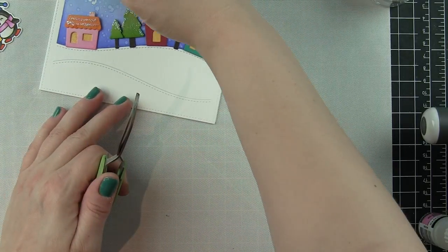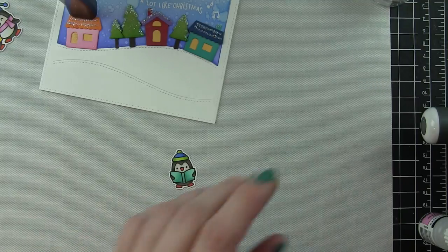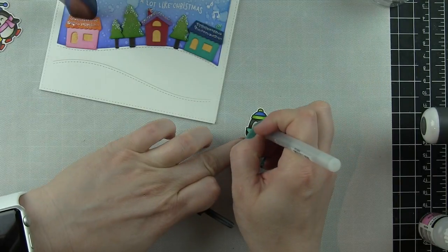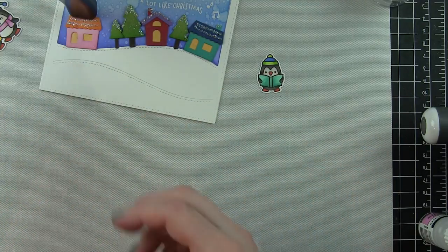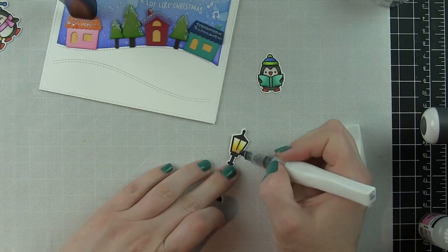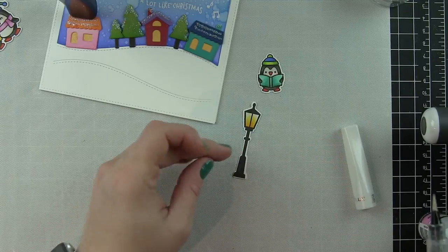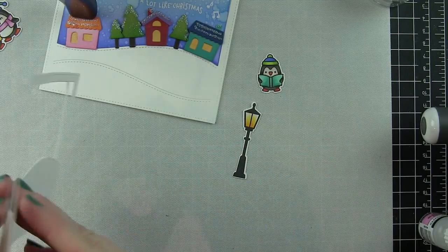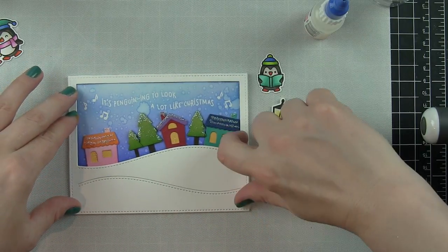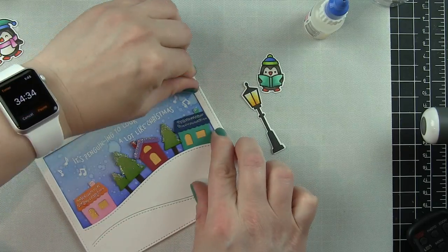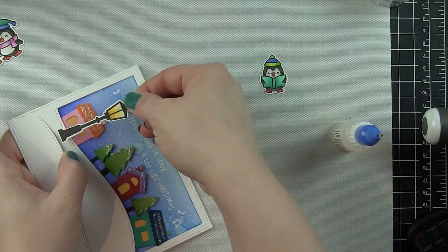So that final back layer is the houses on the Distress Inked background with the greeting. For the penguin that's by himself, he has his eyes open so I'll use a black glaze pen to add detail to those. For the street light, I'm going to take the Wink of Stella clear glitter brush pen and go over the light area to make it glittery. And then I'm going to grab my additional two frames and pop them one on top of another. I think here's a good example of that little tiny bit of dimension and how nicely it frames up that background.